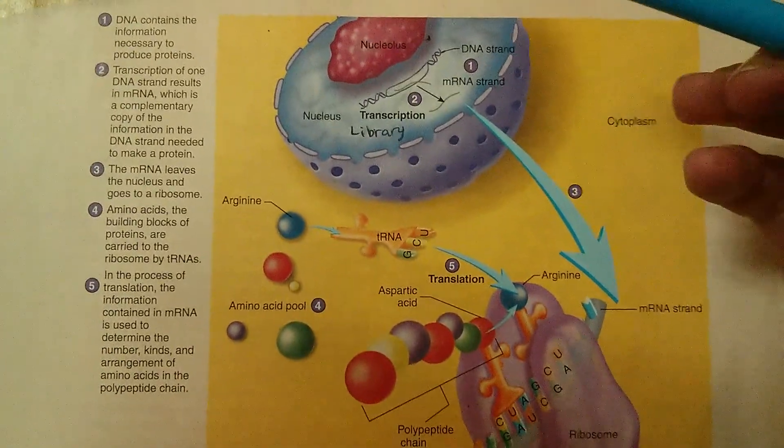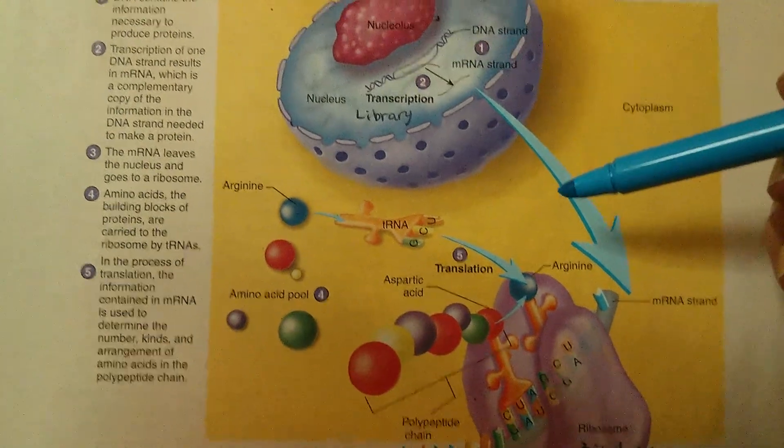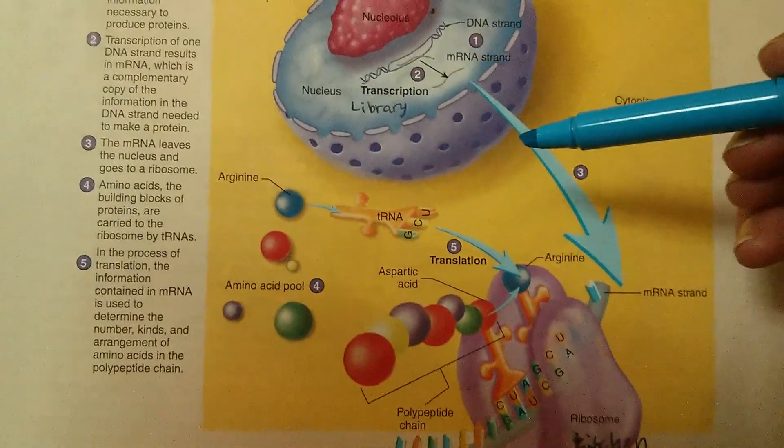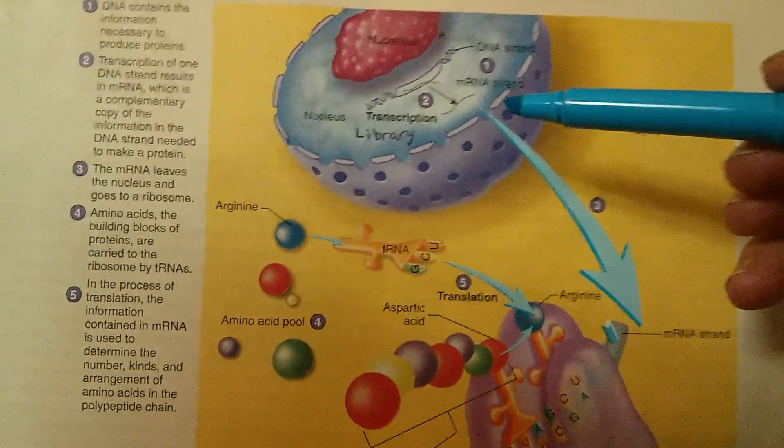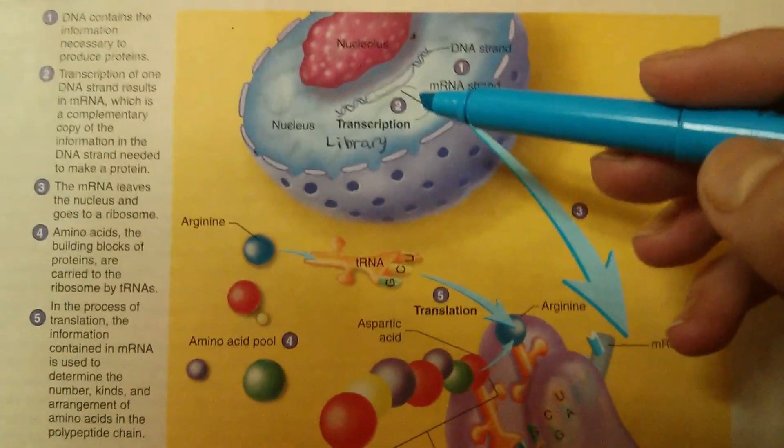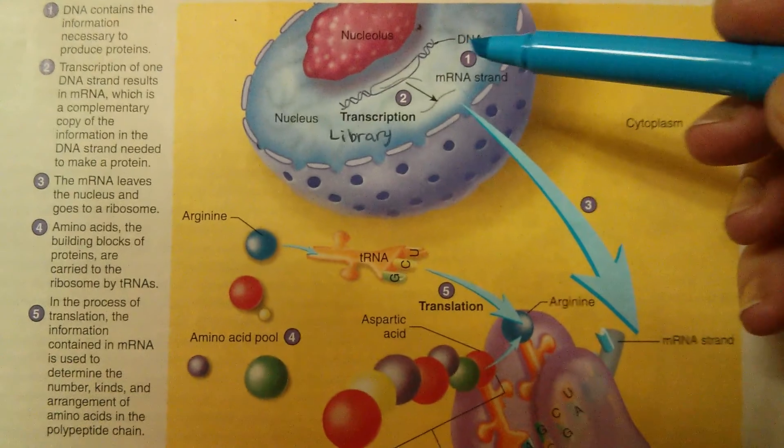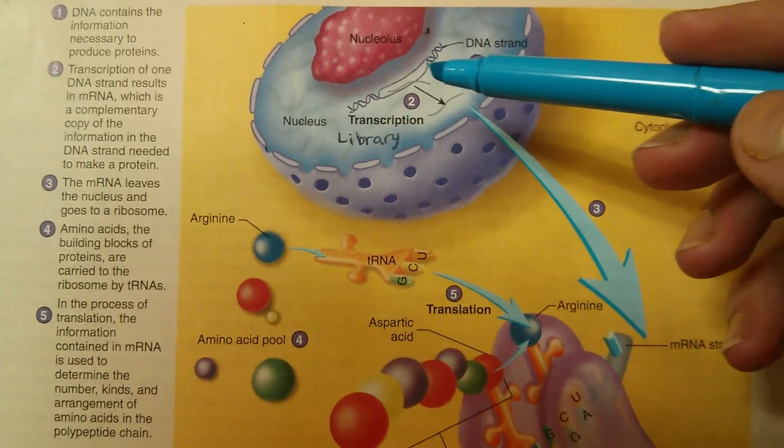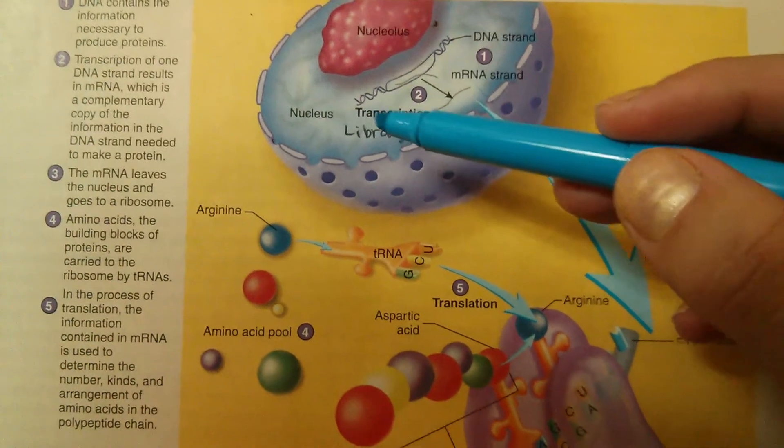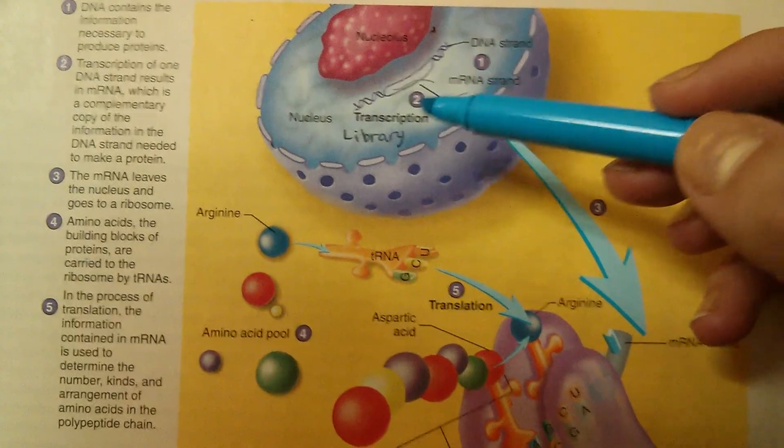But, unfortunately, the cookbook that you found is unable to be checked out of the library. You're not allowed to actually take the physical book outside. So, what do you do? You make a photocopy. Now, this photocopy is going to be only the particular section that you need. This process of making that photocopy is what we call transcription. So, transcription is another way of saying making a copy.